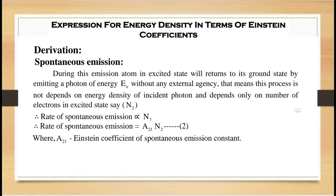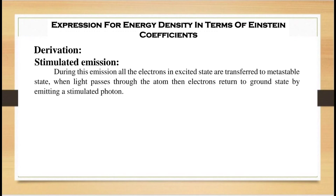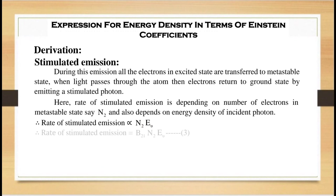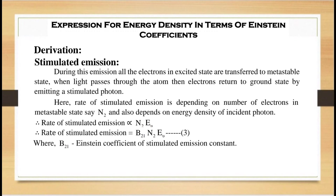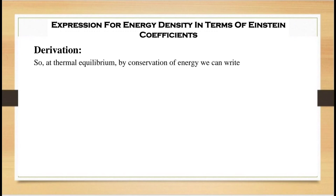Now consider stimulated emission. During this emission, electrons in the excited state are transferred to the metastable state, and when light passes through the atom, electrons return to the ground state by emitting a stimulated photon. The rate of stimulated emission depends on the number of electrons in the metastable state N2 and also on the energy density of the incident photon E_μ. Therefore, rate of stimulated emission equals B21·N2·E_μ, where B21 is the Einstein coefficient of stimulated emission.